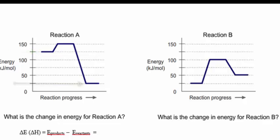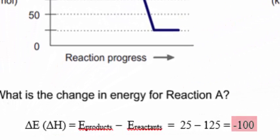And the energy of the products is where the curve ends. And the energy for the products is 25 kilojoules per mole. After substituting those values into the equation, the change in energy is negative 100 kilojoules per mole.